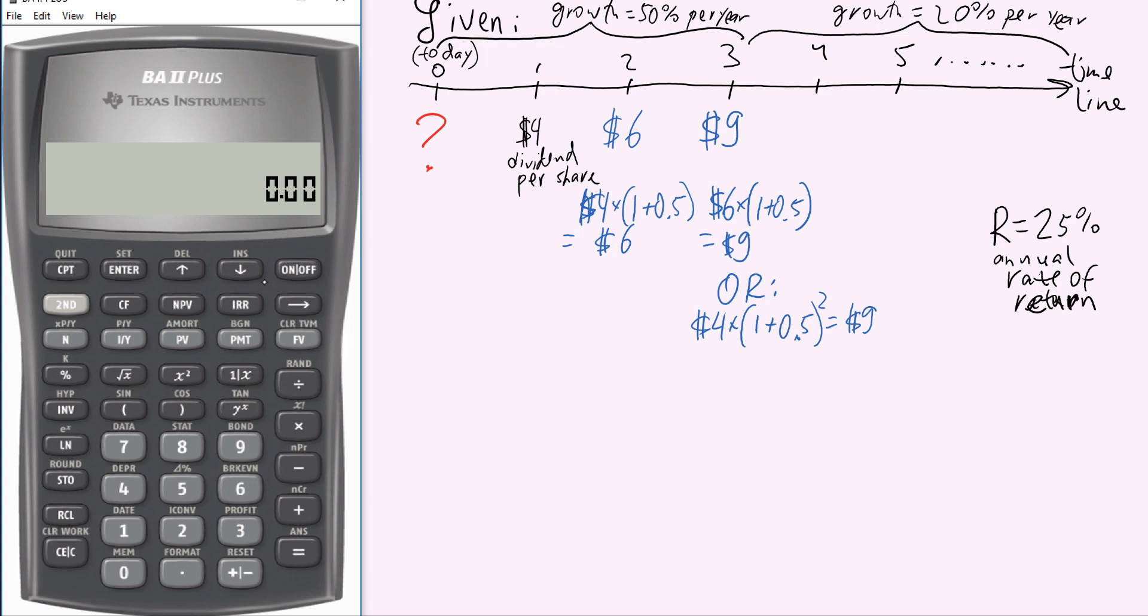Or you can again use the financial calculator. So let's turn it on. Again, let me use $4 as my present value. 4, make it negative, PV. 2 is my new N, number of years. 50 is still the same growth rate. That's for year 2 and year 3. 50 is my IY, compute future value, $9. So this is correct. This is step 1, essentially.